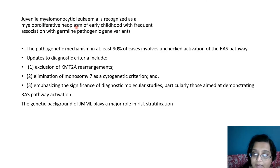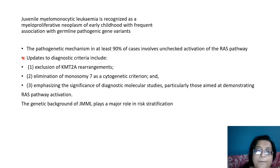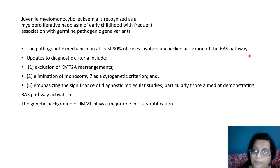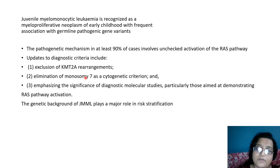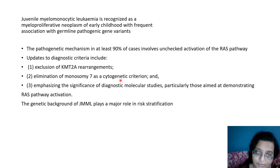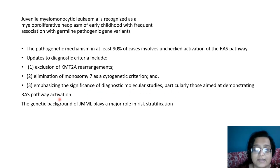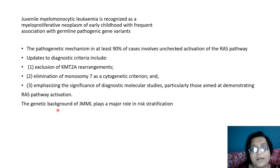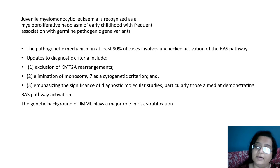JMML is now recognized as an MPN with frequent association of germline pathogenic gene variants. The pathogenic mechanism involves the RAS pathway in at least 90% of cases — RAS pathway mutation is the key driver in JMML. Updates include removal of the exclusion of KMT2A rearrangement, with emphasis on diagnostic molecular studies. Rather than monosomy 7, demonstrating RAS pathway activation is now required. The RAS pathway genetic background also serves as a prognostic and risk factor indicator.